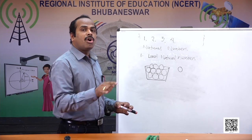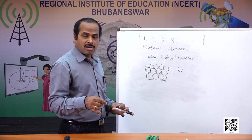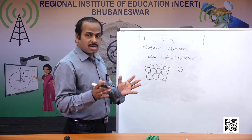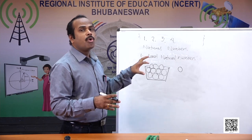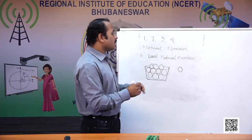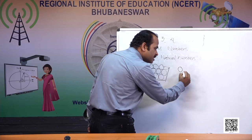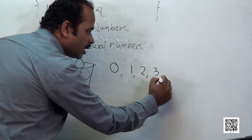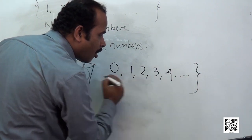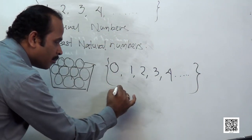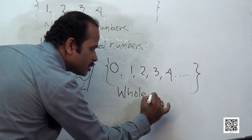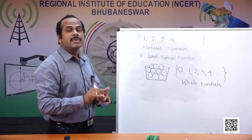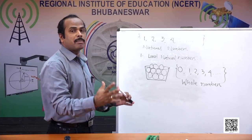When we required zero, we started thinking that all numbers — zero, one, two, three, four — also represent a whole number of things. When we represent some goods, some quantities, some things, we use whole numbers. Whole numbers are all natural numbers along with zero: zero, one, two, three, four and so on. These are all called whole numbers, used for expressing whole number of quantities.